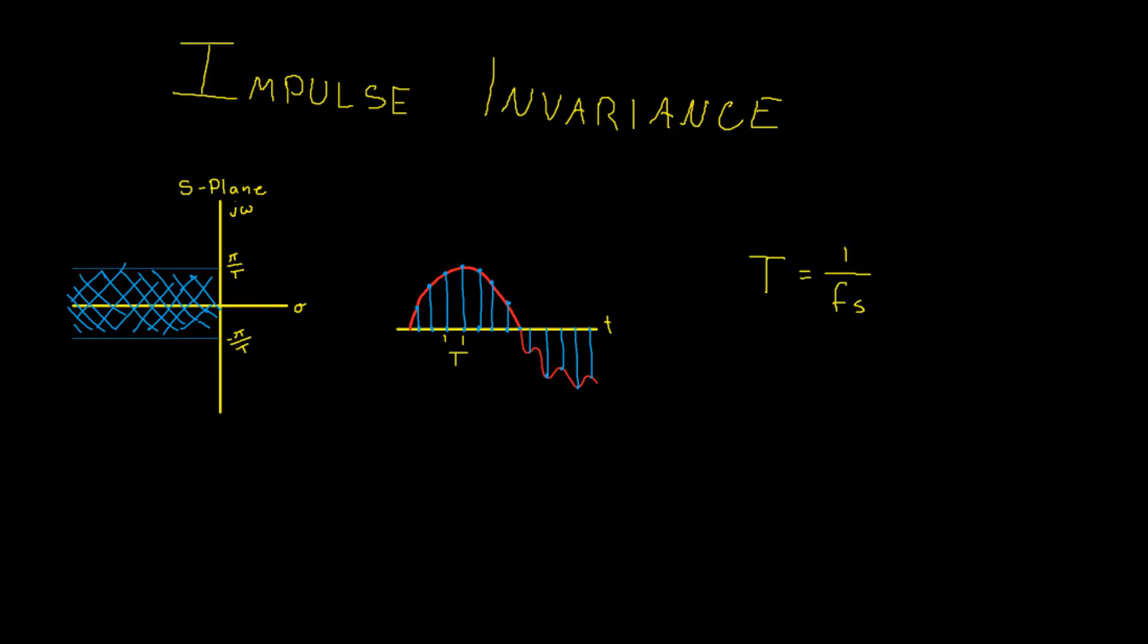So how do we do this? Well, the impulse invariance method works by sampling an analog frequency response with a chosen sampling frequency f of s. f of s therefore has a period of T. Now when we are mapping, our period of T defines how much of our frequency response of our analog system we get.